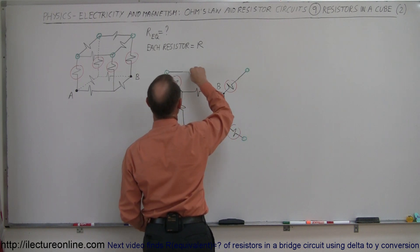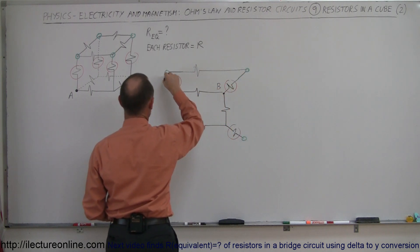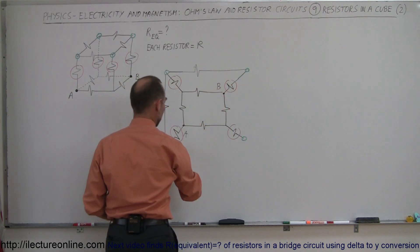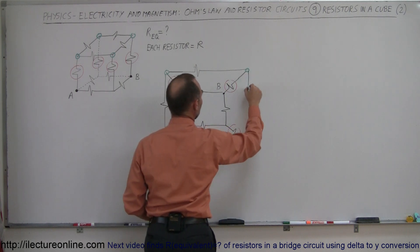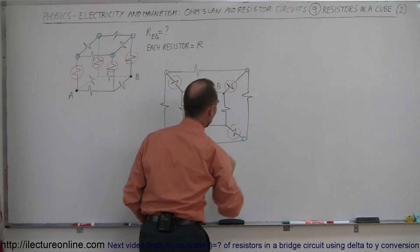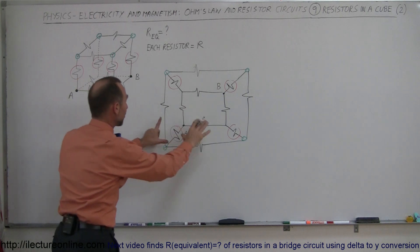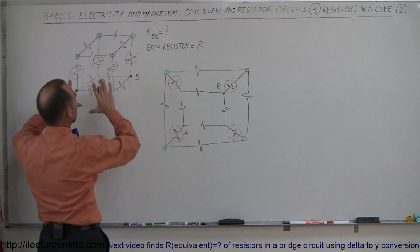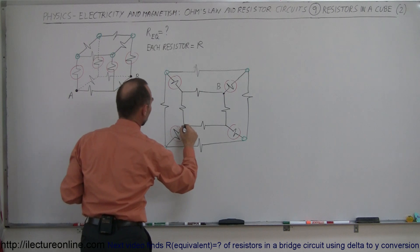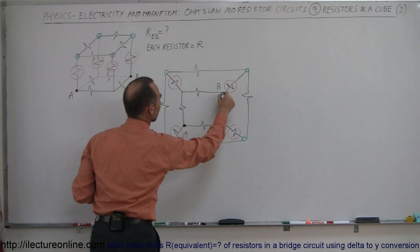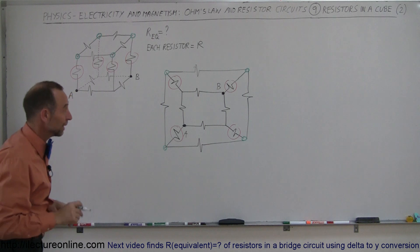Coming back over this way — here's my resistor this way, here's my resistor this way, here's my resistor this way, and finally my resistor this way. That is the very same problem we have here, except we've now made it two-dimensional instead of three-dimensional. There's still A and there's still B, and we're trying to find the equivalent resistance between A and B.